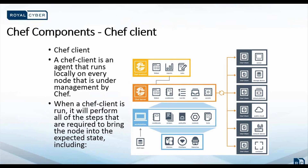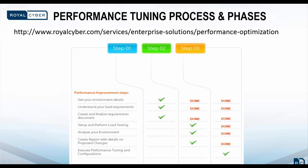A Chef client is an agent that runs locally on every node that is under management by Chef. When a Chef client runs, it will perform all of the steps required to bring the node into the expected state, including registering and authenticating the node with the Chef server, building the node object, synchronizing the cookbooks, compiling the resource collection by loading each of the required cookbooks including recipes, attributes, and all other dependencies, and taking the appropriate and required action to configure the node and handling exceptions and notifications as required. This is an overview of performance tuning phases our team has followed for various clients, and we have excellent expertise to meet any of your performance tuning goals. For details on our performance optimization program, you can visit the website.